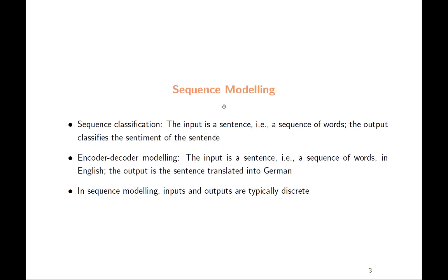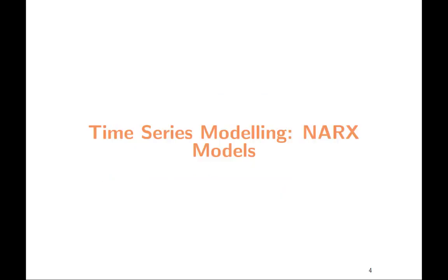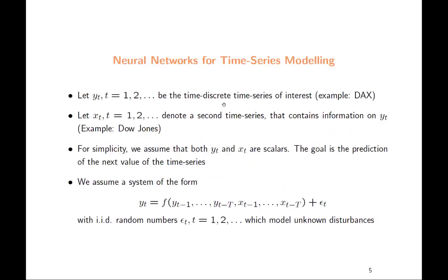Slightly different but related is sequence modeling. As an example, the input is a sequence of words, and the output classifies the sentiment of the sentence. Or in an encoder-decoder situation, the input is a sentence — a sequence of words in English — and the output is a sentence translated into German or French. In sequence modeling, inputs and outputs are typically of a discrete nature.